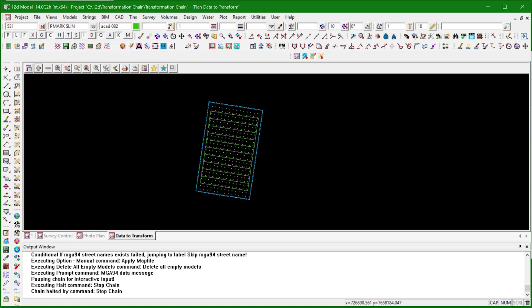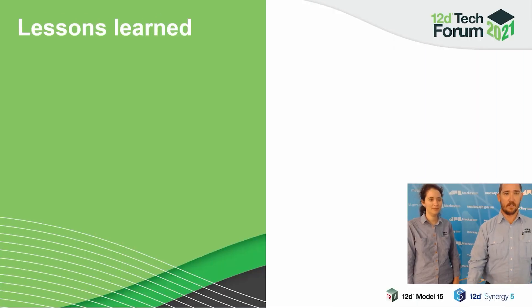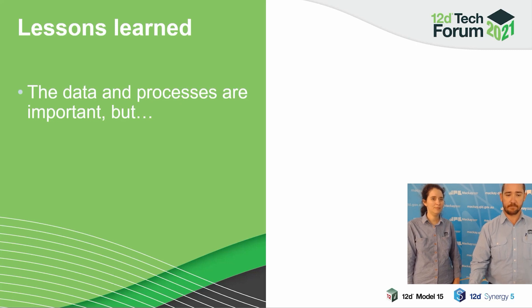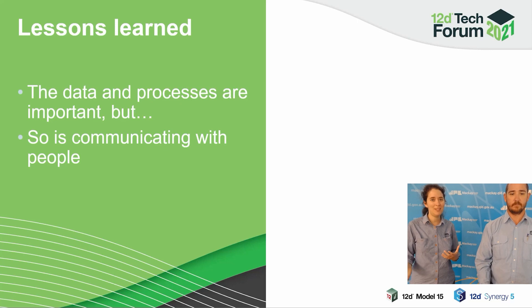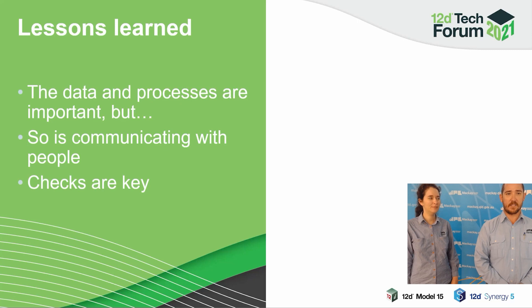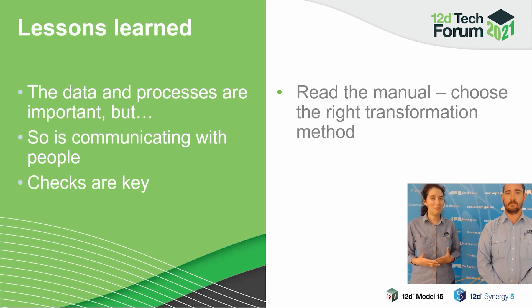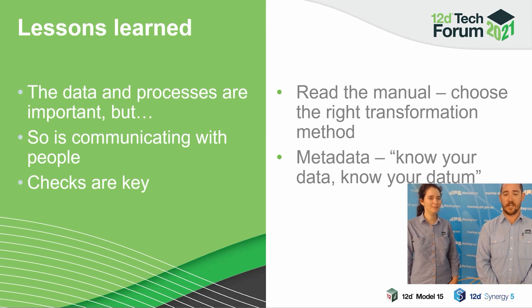In terms of lessons learned: the data and processes are important, but anyone with spatial knowledge shouldn't have much trouble implementing a datum transformation. However, we have a lot of people who use spatial data without really understanding it, and they're the ones we need to communicate with so they know what's going on. Checks are key — any surveyor knows to check their data as standard, so applying these checks to this process should be simple. We found aerial photography is a great check. Make sure you read the GDA 2020 technical manual, because different states have different transformation methods and you don't want to pick the wrong one. It all comes down to your metadata — know your data, know your datum.